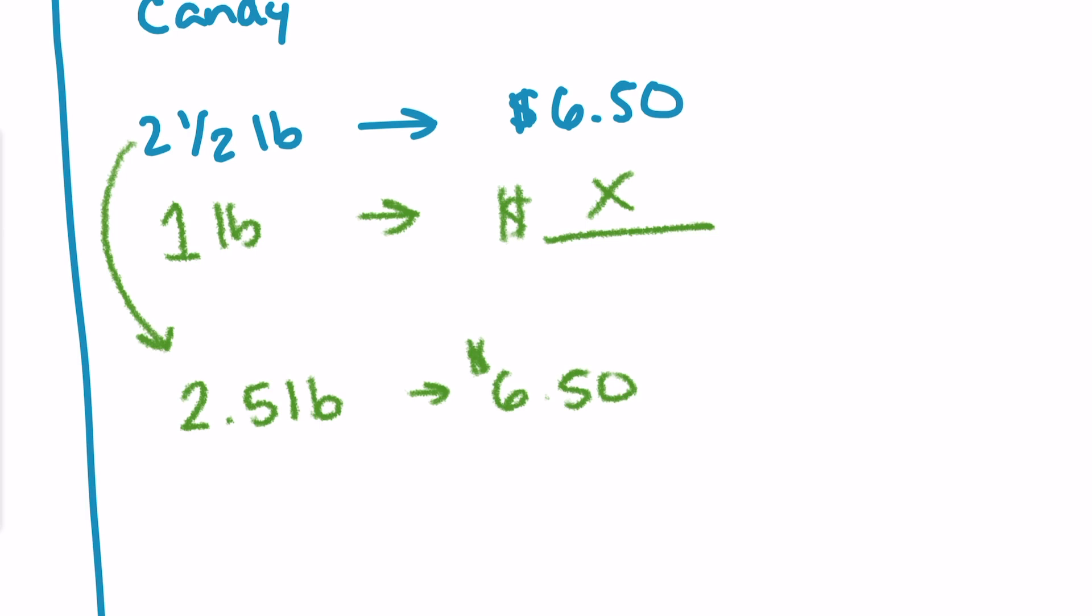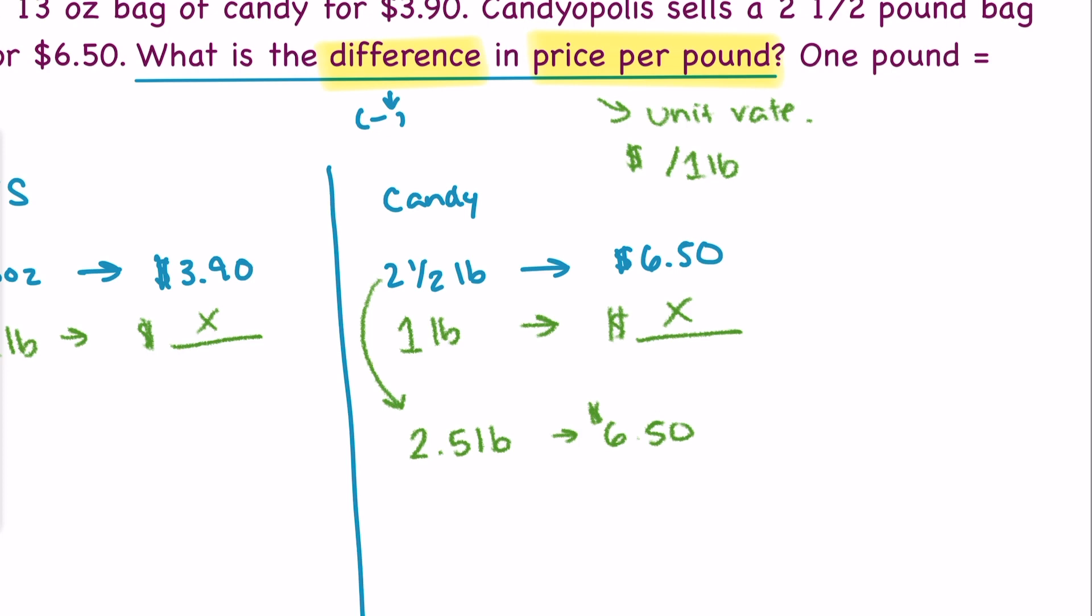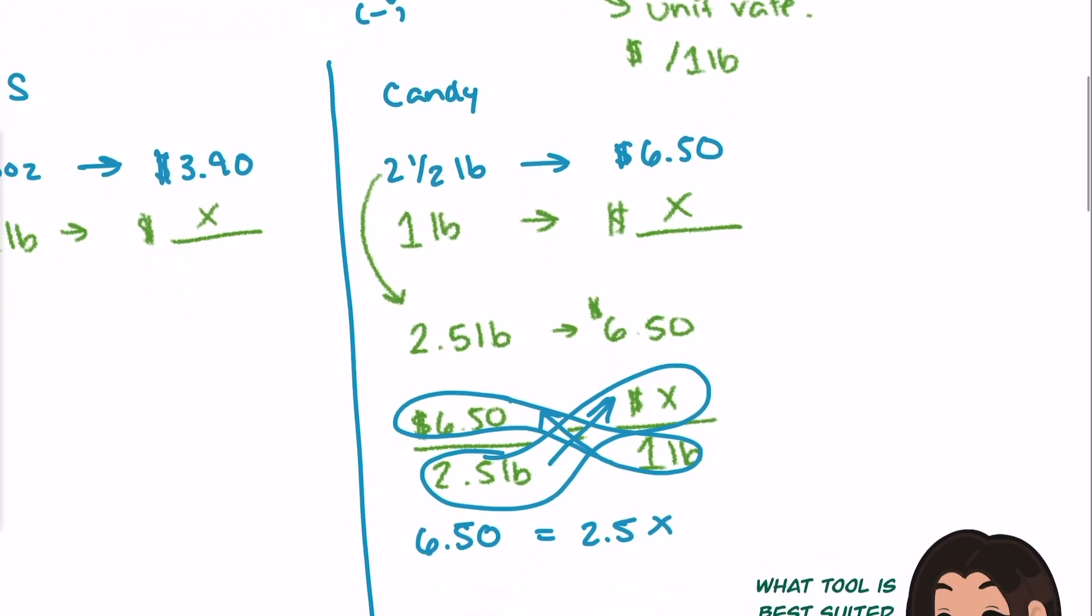Since I'm looking for price per pound, that unit rate's telling me that I want my price on top and my pounds on the bottom. $6.50 is selling 2.5 pounds, and that's going to be equal to whatever the price is for one pound of this candy. I can cross multiply and solve because equivalent fractions have equivalent cross products. Some of you guys may have learned this as cross multiplication. $6.50 times 1 is just $6.50. $2.5 times x gets me $2.5 times x.